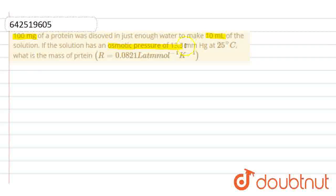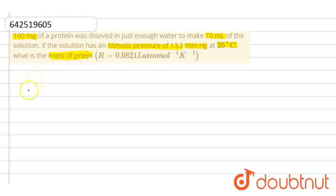The osmotic pressure is 3 mm of Hg at 25 degree Celsius. What is the mass of the protein? Here is the solution.